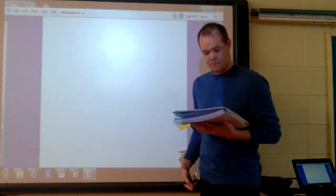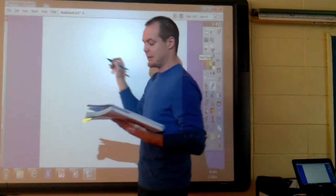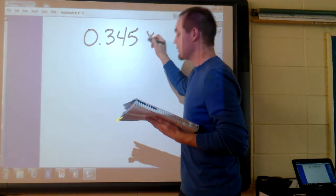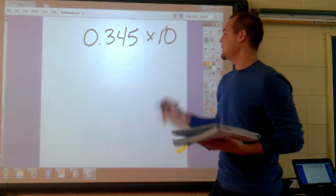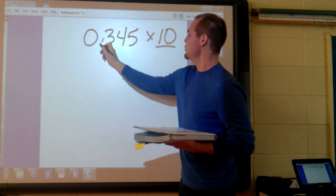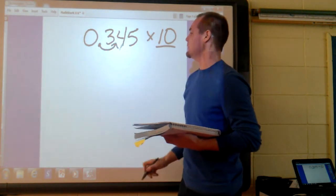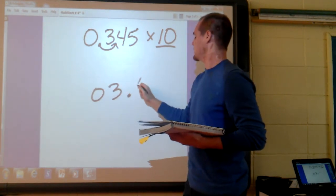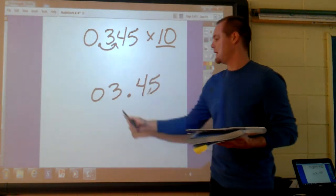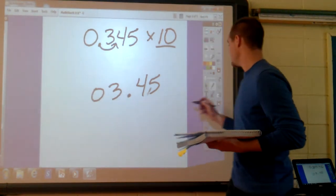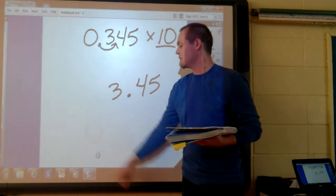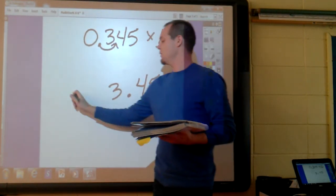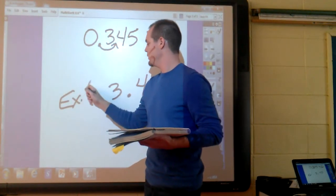Example three. We'll do practice problem D. We have 0 and 345 thousandths and we're multiplying it by 10. When you multiply by a number like 10, you move it one digit to the right. So now my number looks like this. It's 3 and 45 hundredths. We know that this zero is unnecessary so we'd probably want to drop it. My answer is 3 and 45 hundredths for example three.